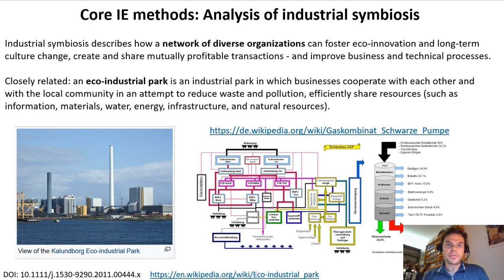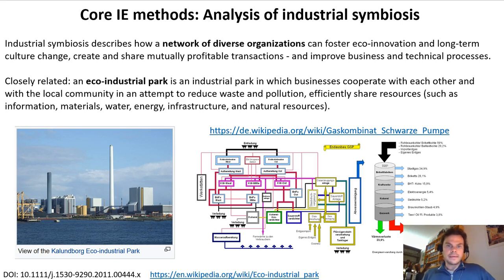Industrial symbiosis is the fourth method. It describes how a network of diverse organizations can combine together to foster eco-innovation and long-term cultural change in a local system, mainly by reusing each other's waste and re-utilizing energy flows. A typical example can be found in eco-industrial parks — parks where different businesses cooperate to exchange waste flows, which can be another industry's raw material, thus reducing pollution and sharing common energy and water supply infrastructure.